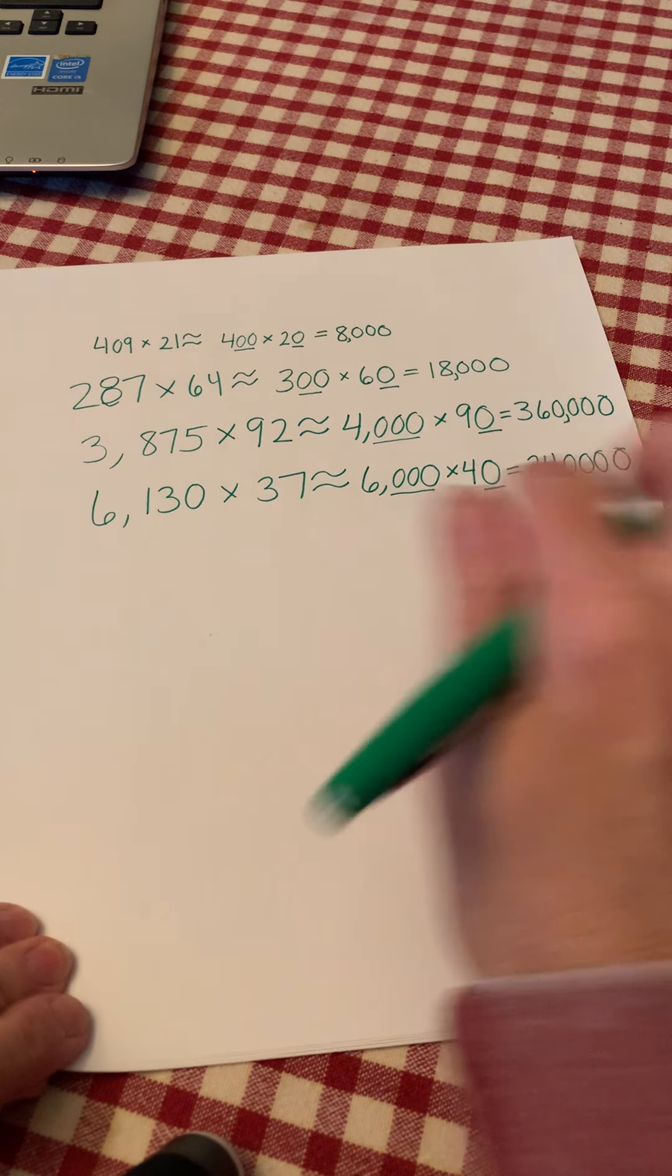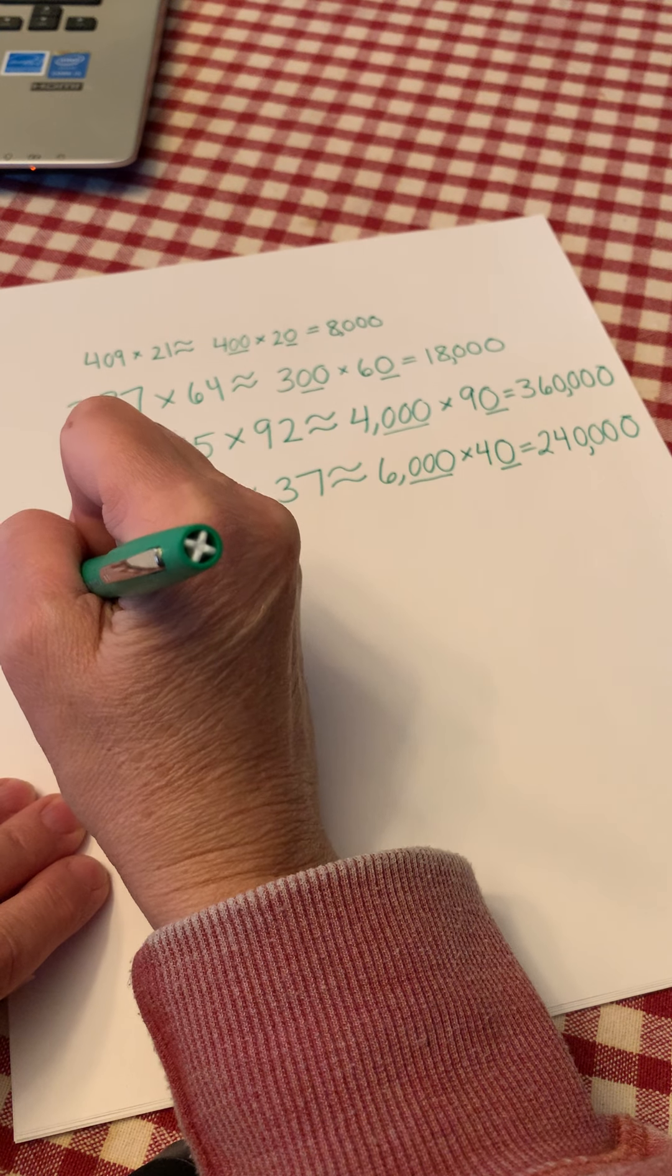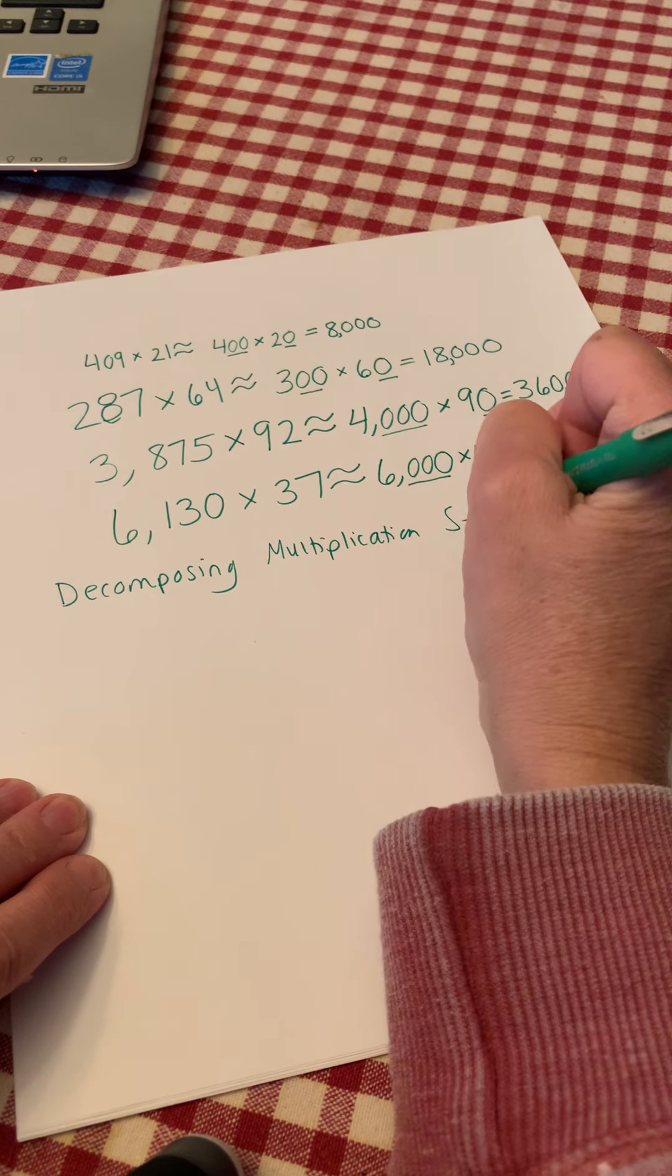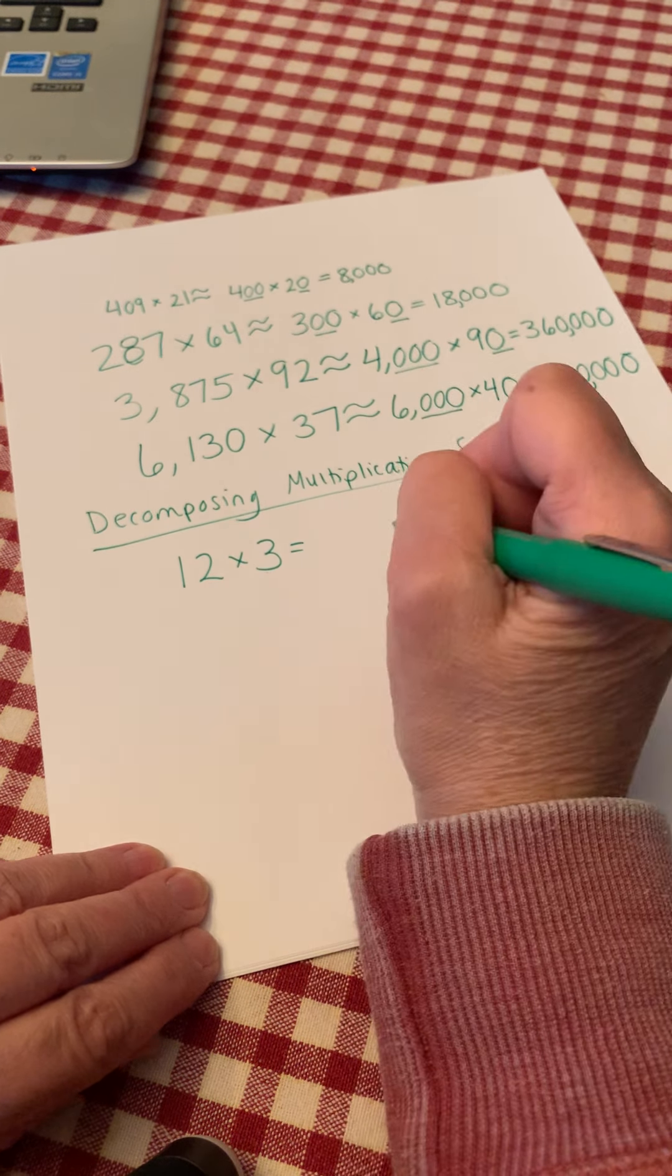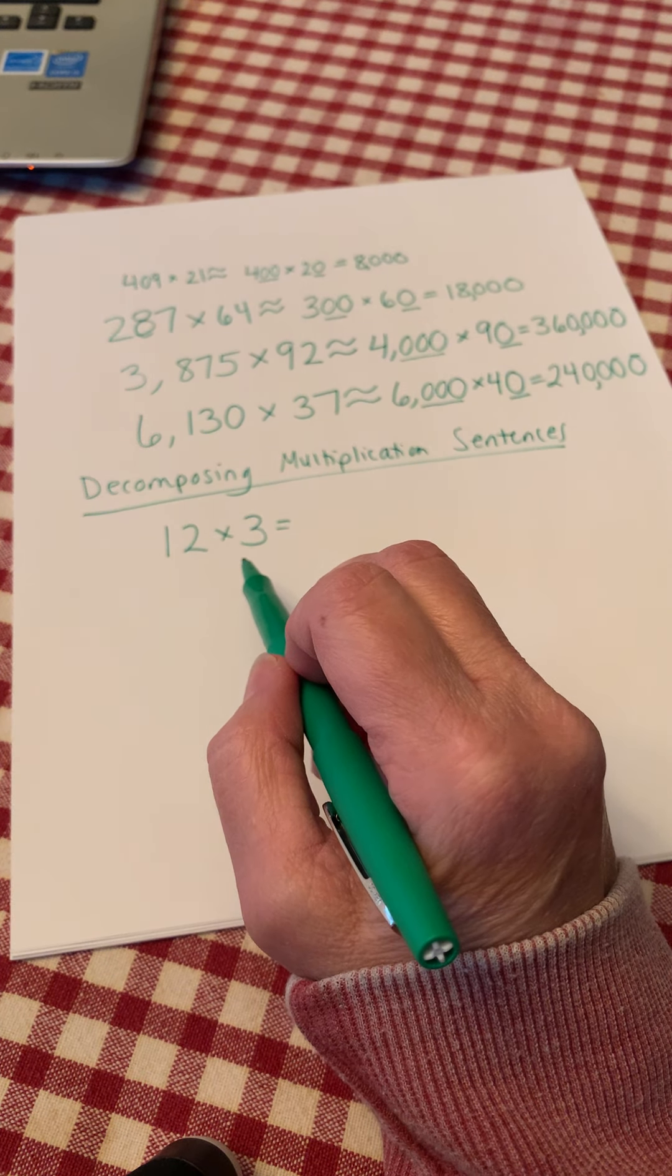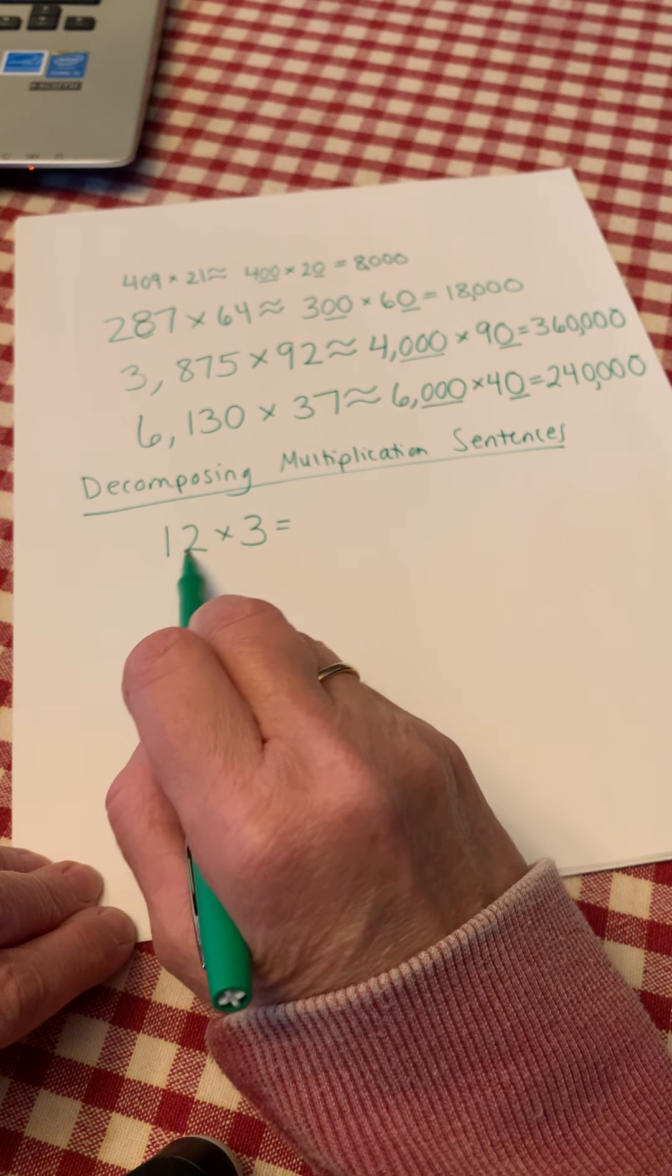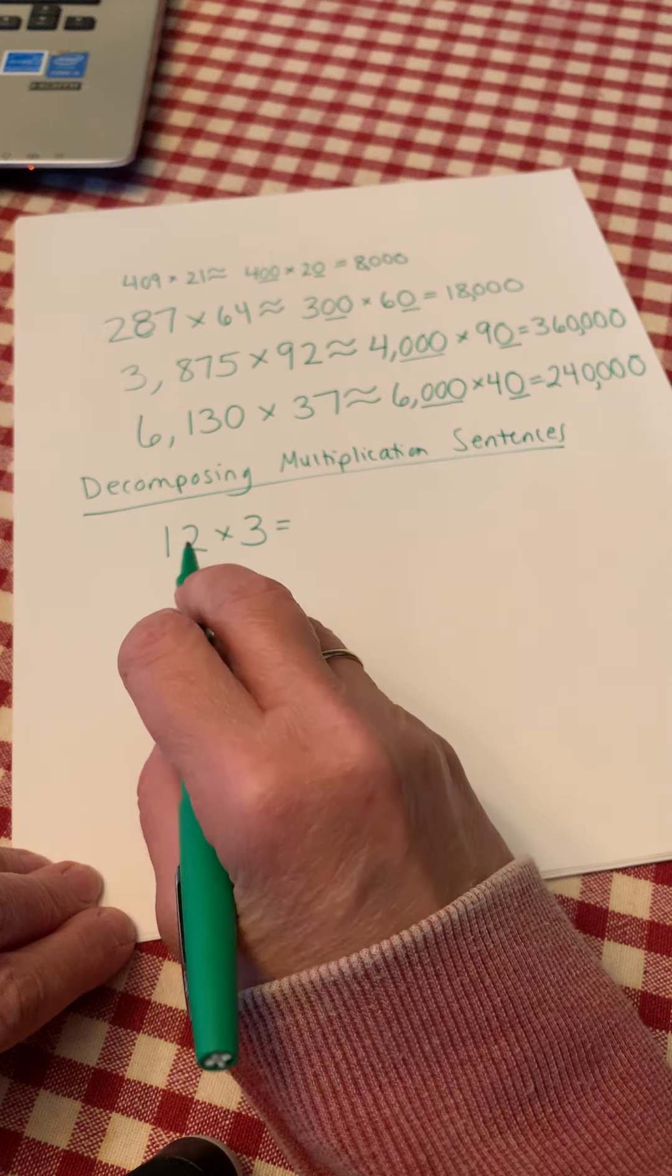Then we moved on and we started decomposing multiplication sentences. We were actually writing them in words and numbers and doing a lot with that. And today's lesson is all about this. So I'm going to show you a quick review of decomposing multiplication sentences. So on your paper I want you to write down 12 times 3. Now you may already know the answer for that, but remember what I told you. Sometimes it's easier for me to show you a new strategy with an easier problem and then we can take that strategy and apply it to more difficult problems.